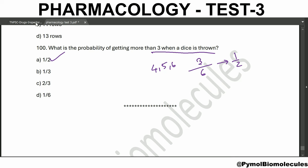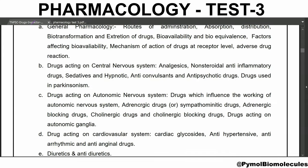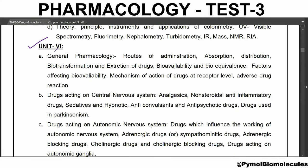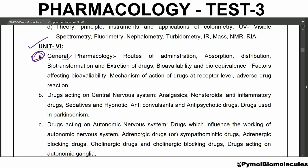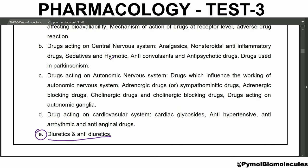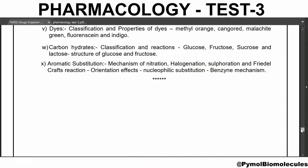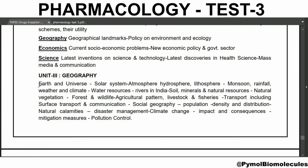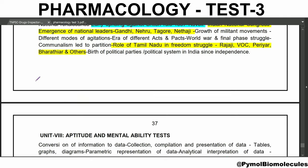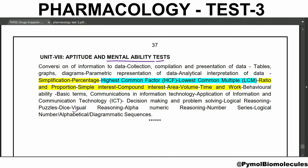The syllabus for the next test is unit 7 of pharmacology - general pharmacology, diuretics, and anti-diuretics. For general studies it is geography, and for aptitude and mental ability it is visual reasoning and alphanumeric reasoning. If you like this video, please like and subscribe to this channel. Thank you for watching, see you next week.